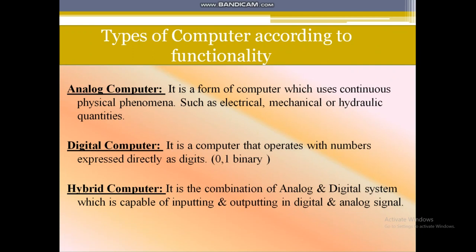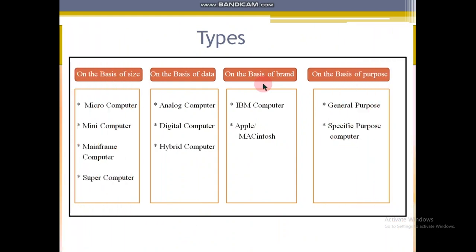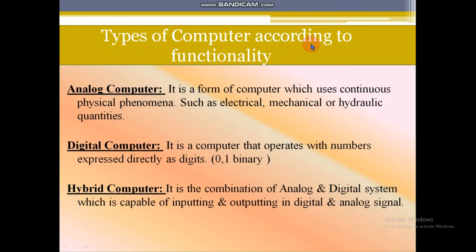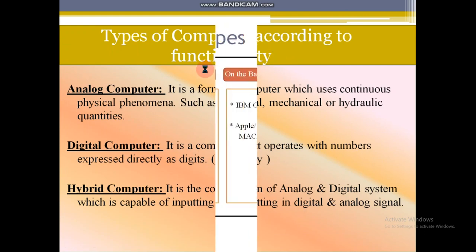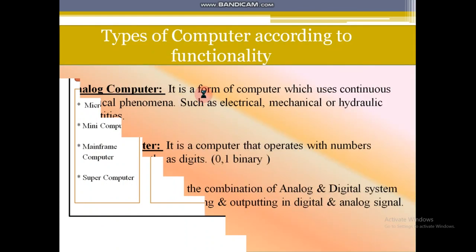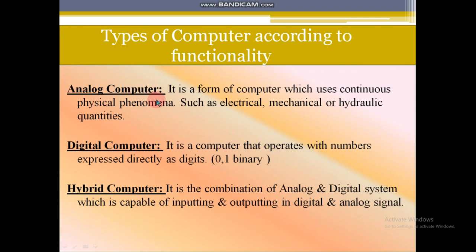Next, let's see the types of computer according to functionality. Starting with the basis of data: what is an analog computer? It is a form of computer which uses continuous physical phenomena such as electrical, mechanical, or hydraulic quantities.